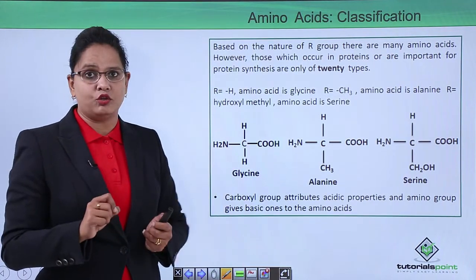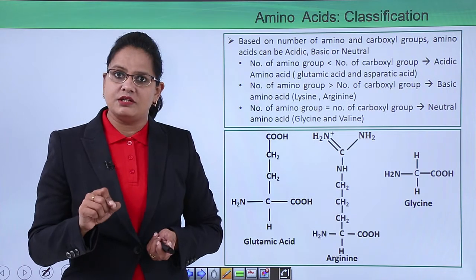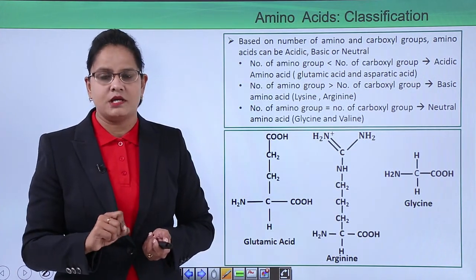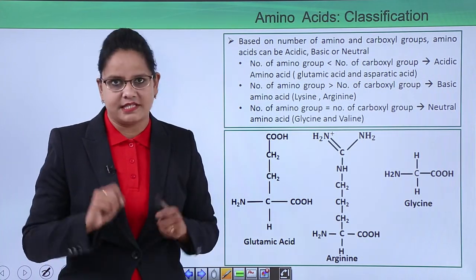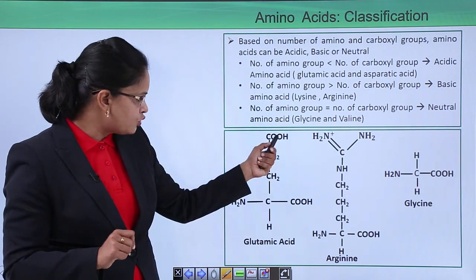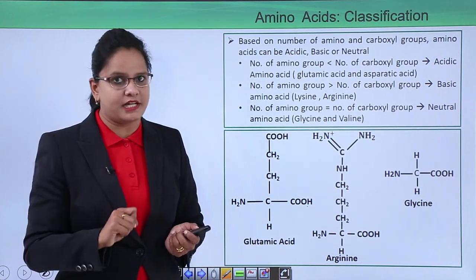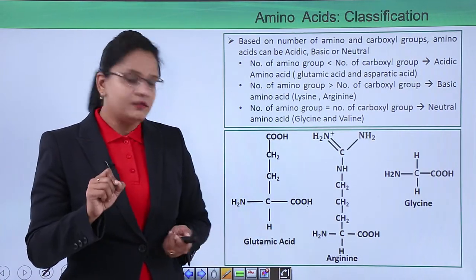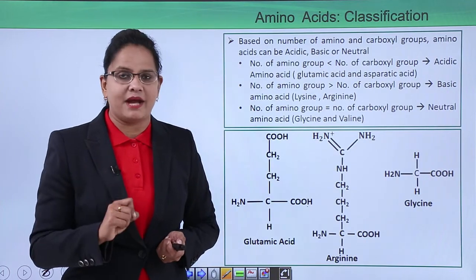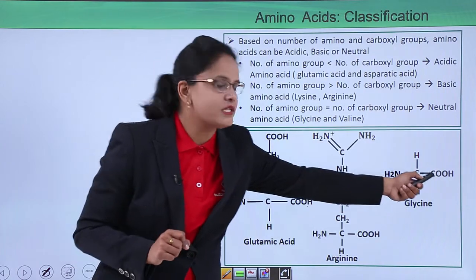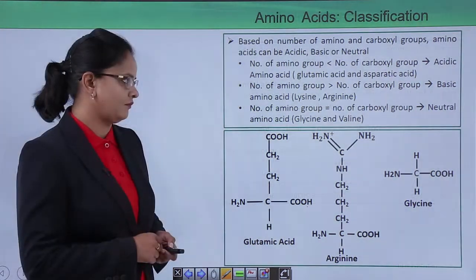The carboxyl and amino groups are responsible for both acidic and basic properties of amino acids. Another mode of classification is based on the number of amino groups and COOH groups. If the COOH group is more than the amino group, the amino acid is acidic — for example, glutamic acid has two COOH groups but only one NH₂ group. Arginine has three amino groups but only one COOH group, making it a basic amino acid. Glycine has equal NH₂ and COOH groups, so it is a neutral amino acid.